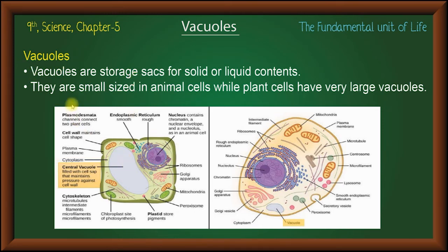Vacuoles are small in size in animal cells, while plant cells have very large vacuoles. Animal cells have small vacuoles, but plant cells have very large vacuoles.